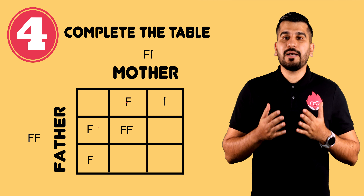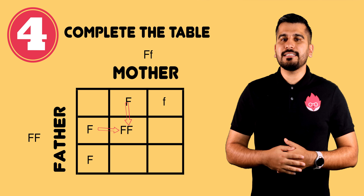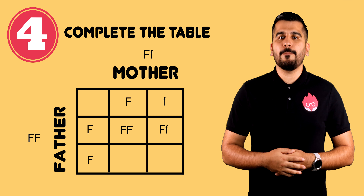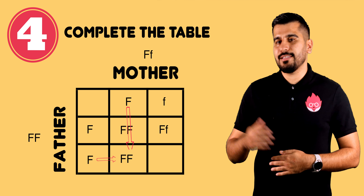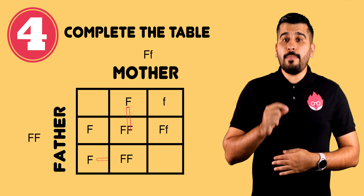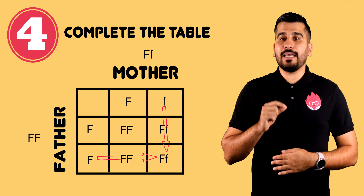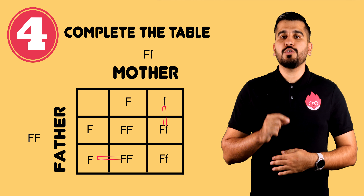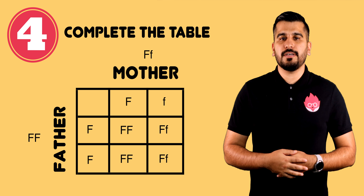Finally, complete the Punnett square by inserting the different genetic combinations in the offspring as shown in the table. Remember, when you have a dominant and a recessive, you should write the dominant letter first.